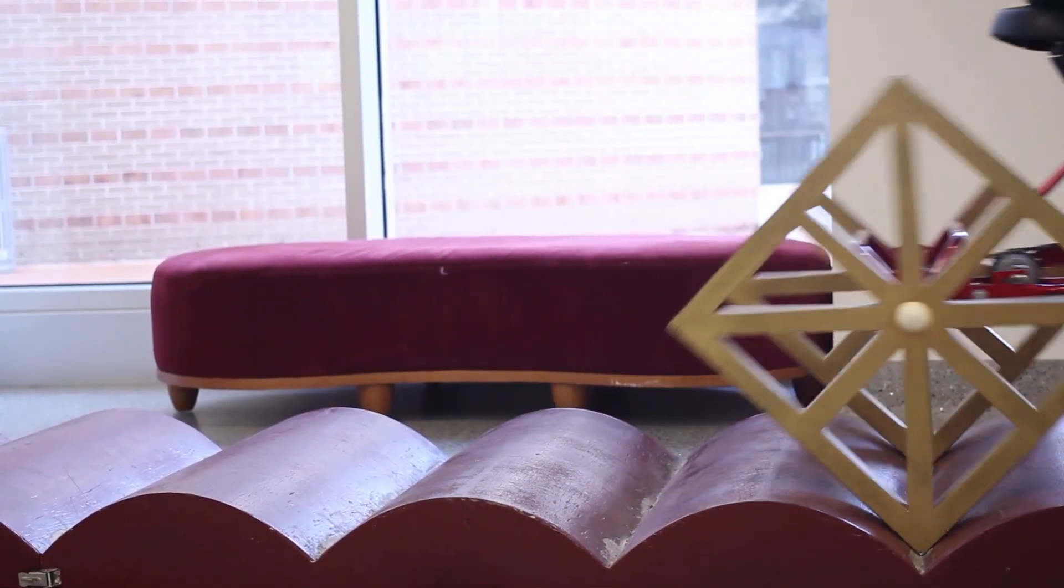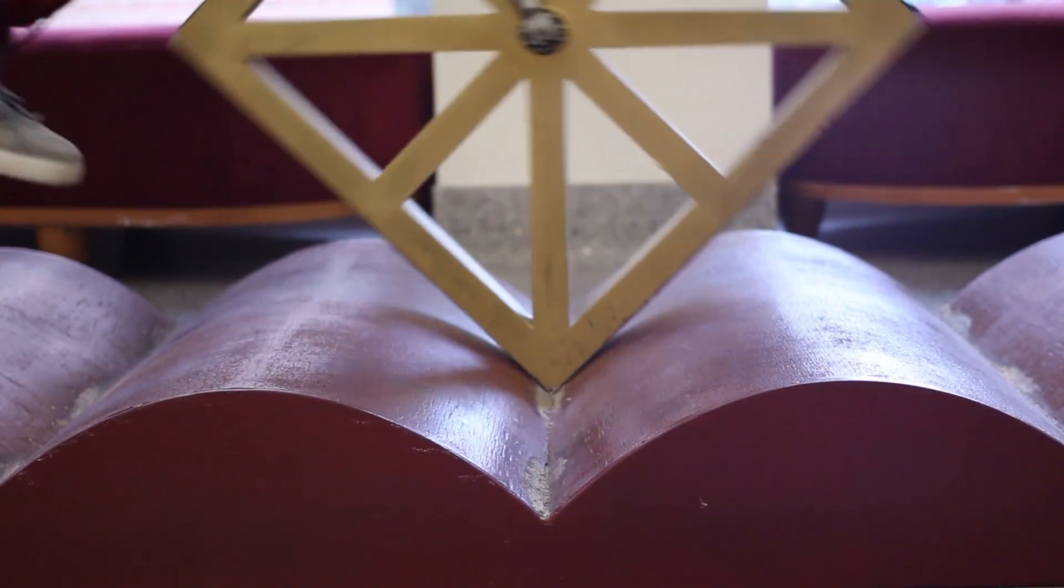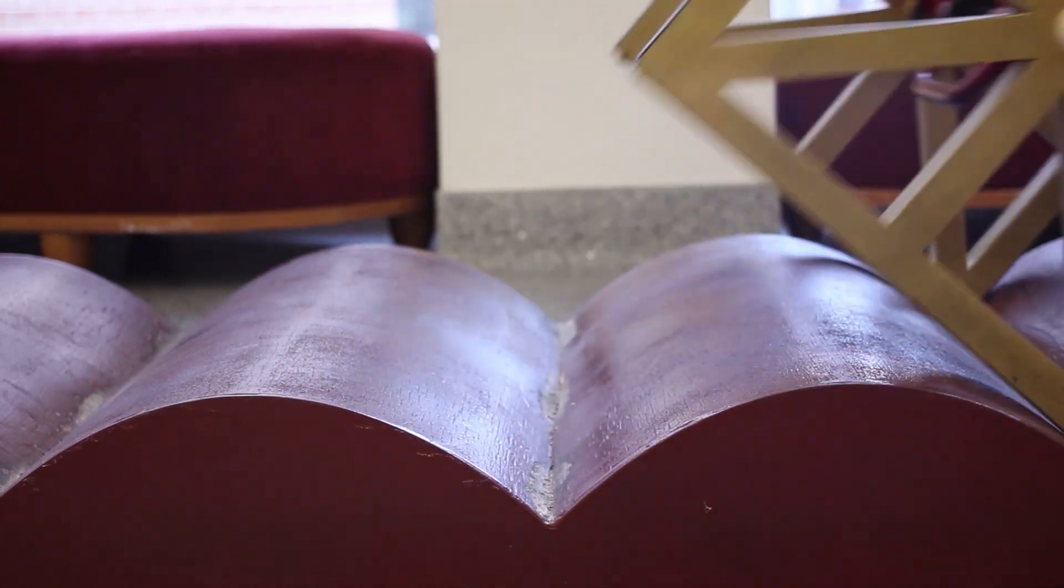The square wheeled trike can roll just as smoothly as a normal bicycle, assuming it travels over evenly spaced shapes. Those shapes? Inverted catenaries.